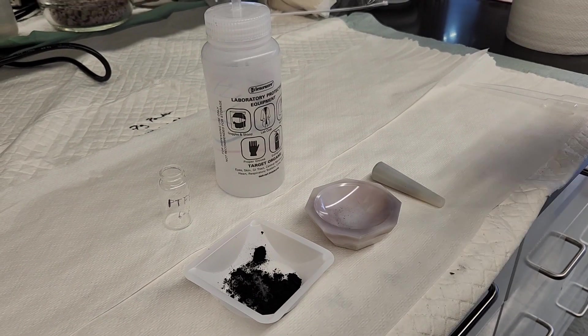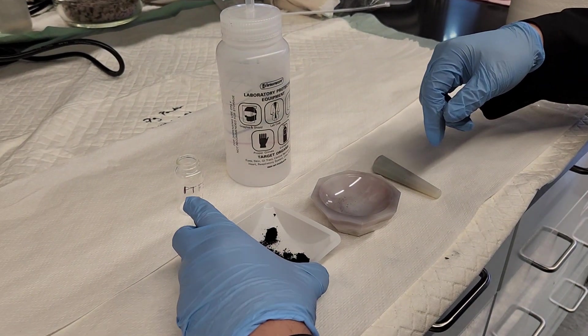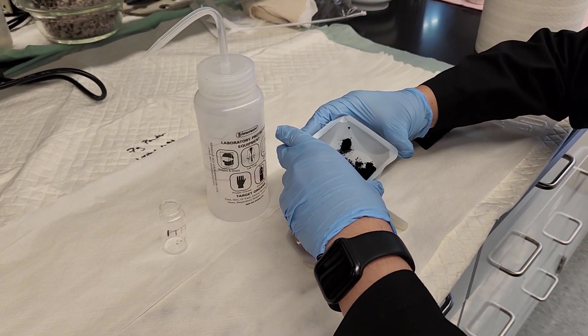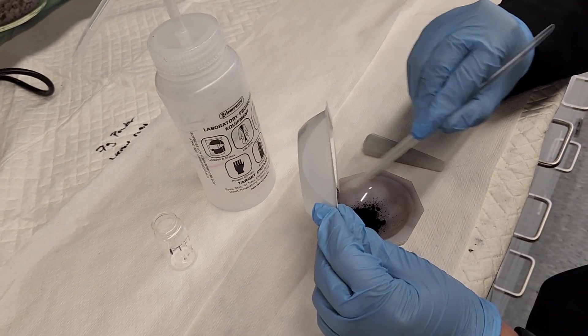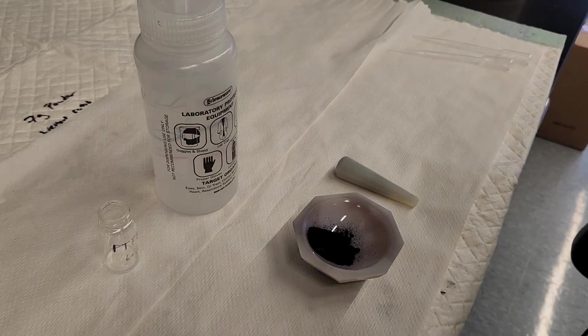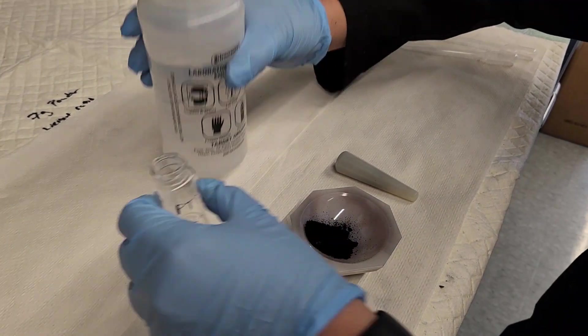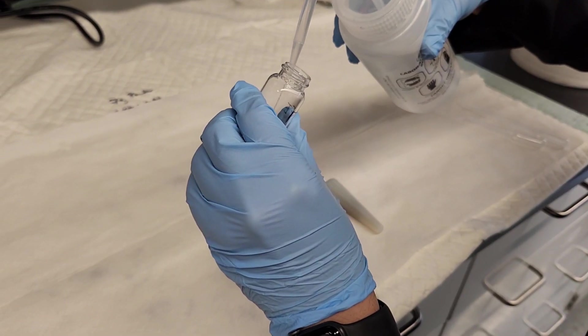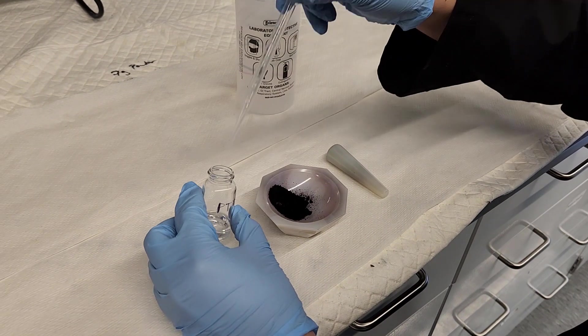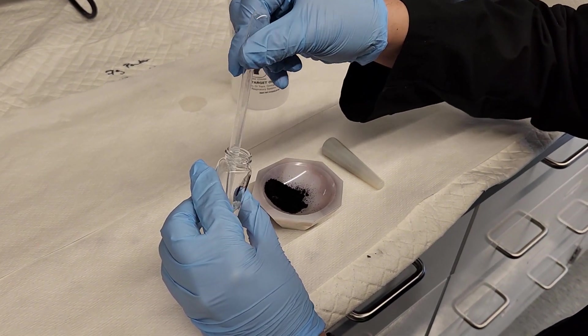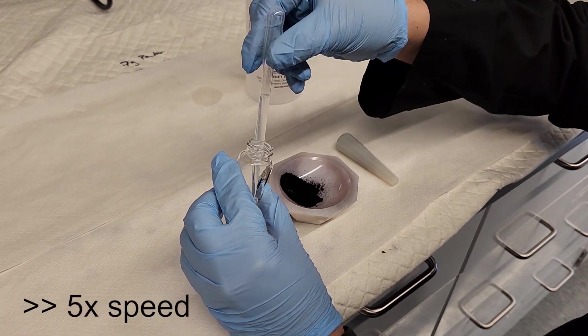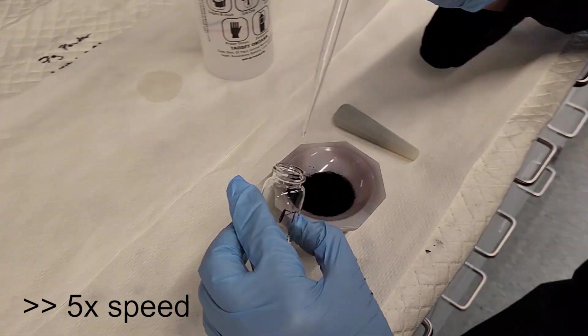Here we are with the measured out activated carbon and PTFE dispersive solution. We added all the activated carbon to the mortar. Then we add ethanol to the vial to dilute the PTFE dispersion. We did a little bit of pipetting just to mix the ethanol with PTFE dispersion and add the mixed solution to activated carbon.